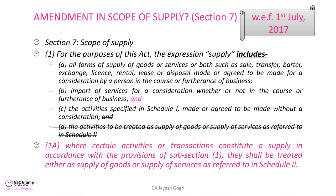The word 'supply' has been defined in Section 7(1) of the CGST Act. Section 7 subsection 1 deals with four situations. The first situation says that any supply of goods or services or both which is made in the course or furtherance of business and which is for consideration would be regarded as supply. So the first sub-clause requires two things: presence of business and consideration.